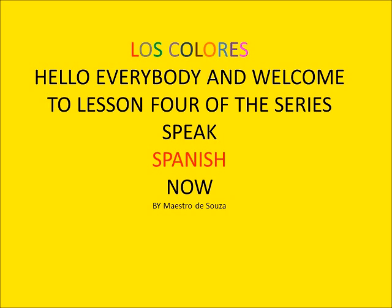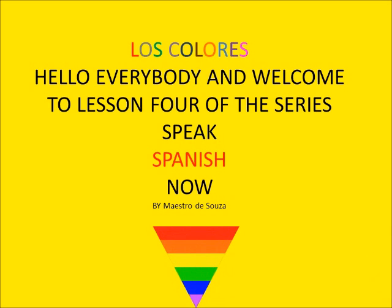I'm going to show you that there are two groups of colors in Spanish. The first one includes the normal colors like blue, green, black, and white — those colors have to agree with the noun. The other group are colors that come from flowers, drinks, or fruit — they don't agree with the noun. I'm going to show you the difference between them, one step at a time.